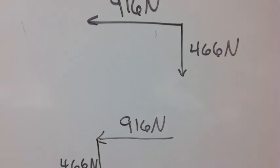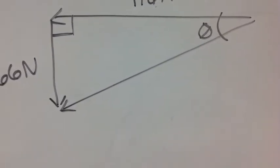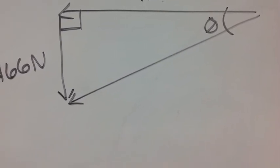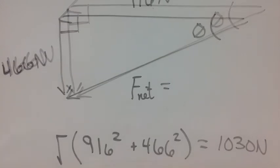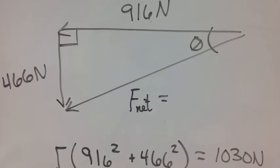They must be drawn head to tail, so slide that 466 to the left. So you have a resultant triangle, and from this resultant triangle you can find the length of the hypotenuse and the direction of the net force.